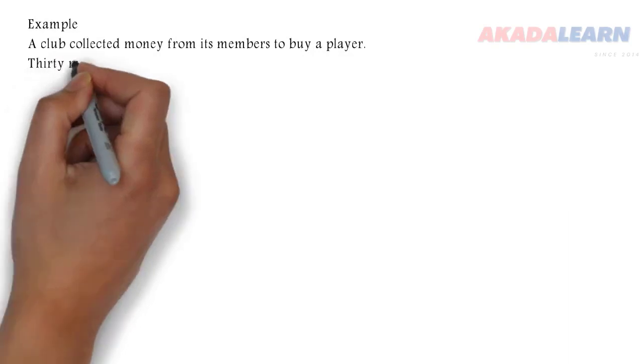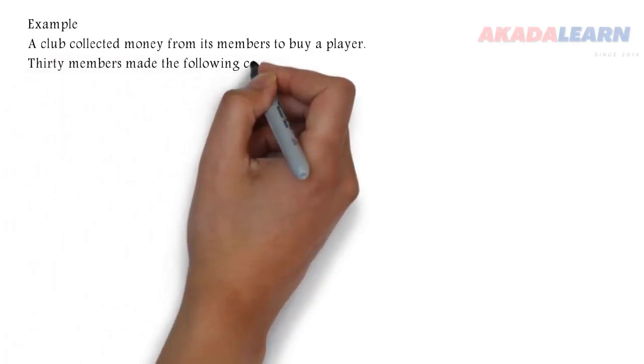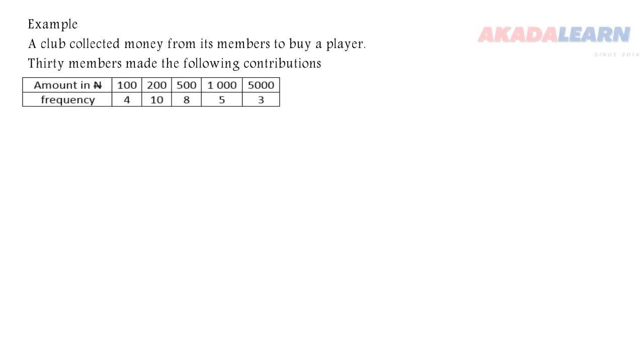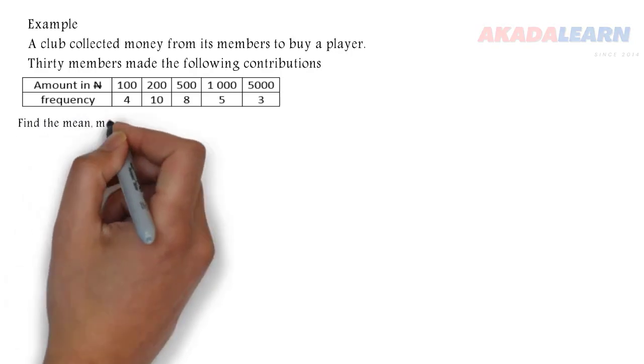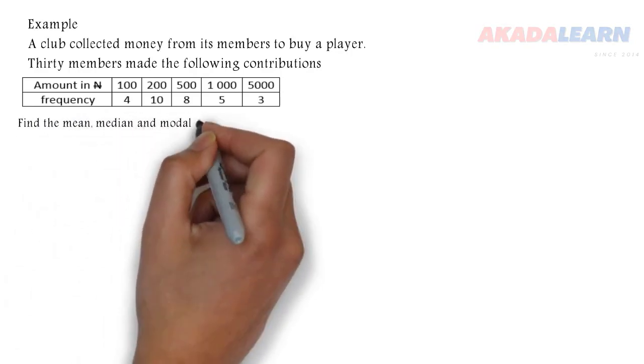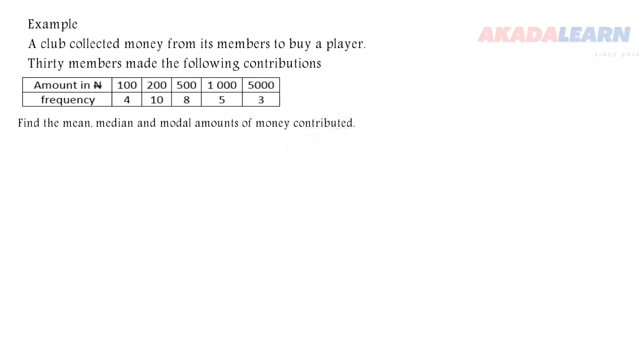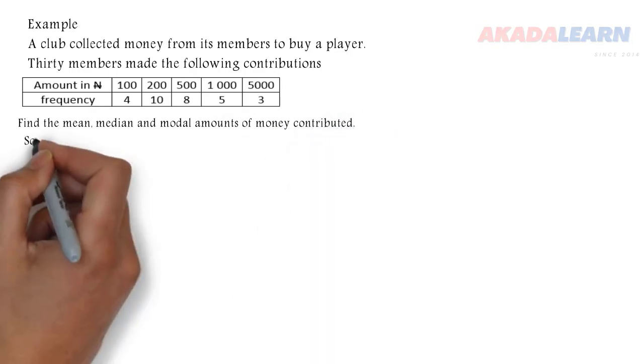A club collected money from its members to buy a player. 30 members made the following contributions as you can see in the table. So 4 people paid 100, 10 people paid 200, and so on. We are asked to find the mean, the median, and the modal amount of money contributed.